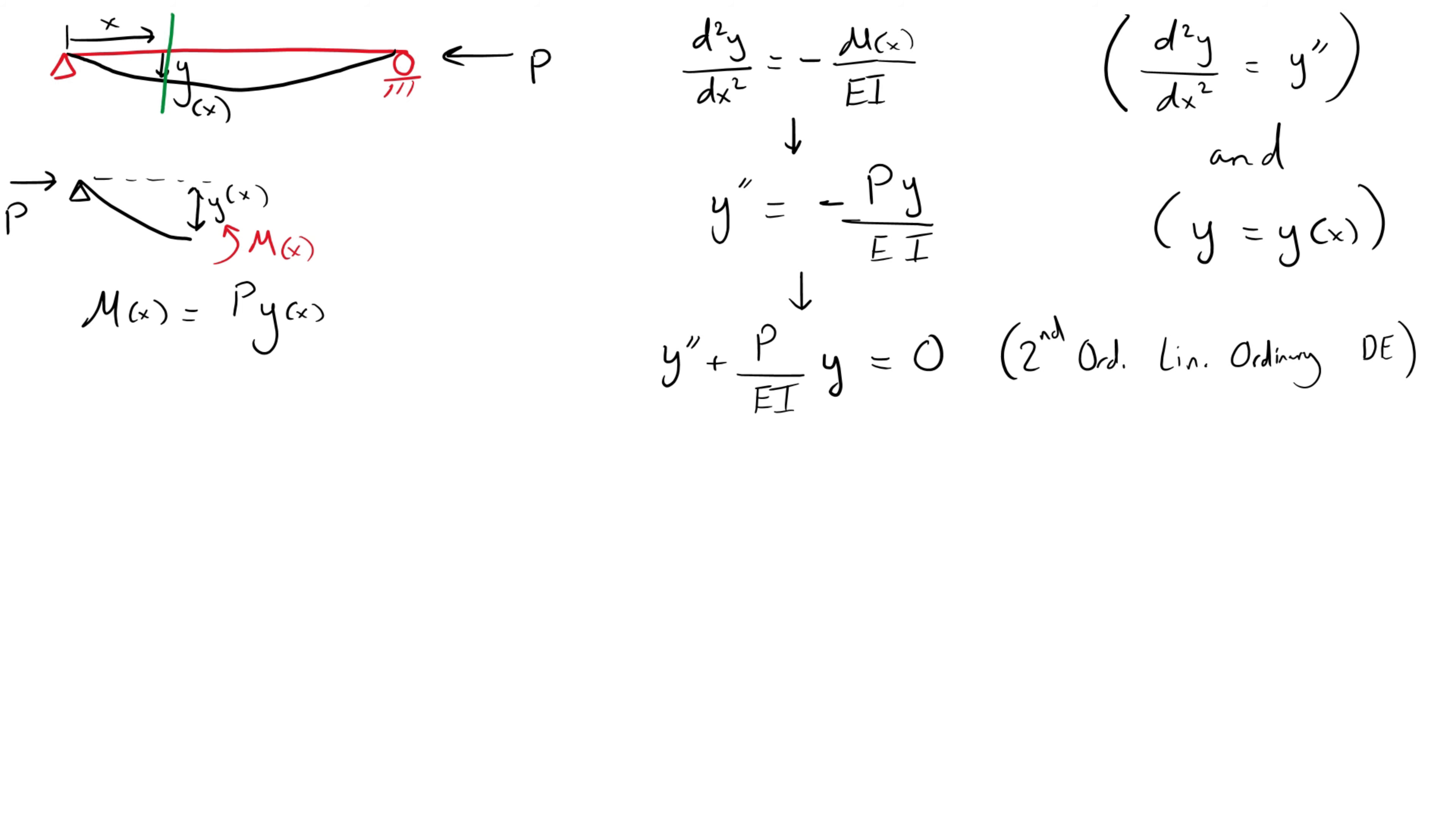So this is a second order, linear, ordinary, homogeneous differential equation. It is second order because the highest derivative is a second derivative. Ordinary because all derivatives are with respect to one independent variable x. Linear because all the terms with y have a power of 1 multiplied by constants, and homogeneous because the right-hand side is equal to 0.